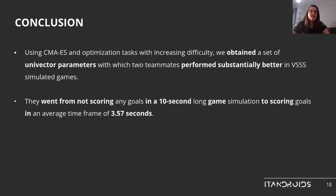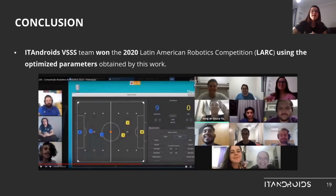So in conclusion, using CMA-ES and optimization tasks with increasing difficulty, we obtained a set of univector parameters with which two teammates performed substantially better in VSSS simulated games. They went from not scoring any goals in a 10-second long game simulation to scoring goals in an average time frame of 3.57 seconds. It is also worth mentioning that the Eat Android's VSSS team won the 2020 Latin American Robotics competition using the optimized parameters obtained by this work.